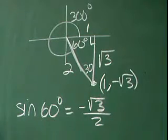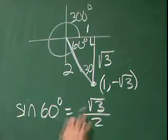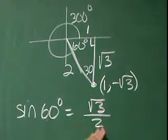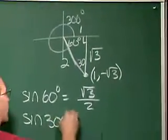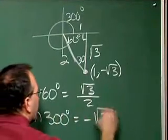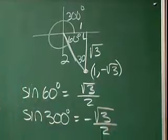Well, the side opposite is really negative the square root of three over two. So, that's the sine of 60 degrees would be positive square root of three over two, but the sine of 300 is going to be negative the square root of three over two.